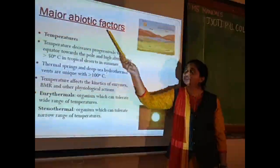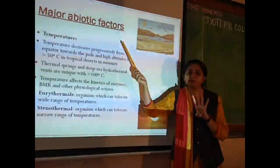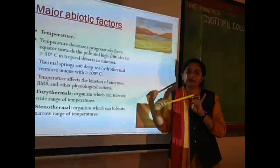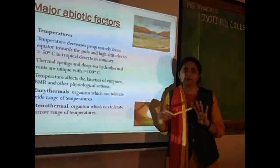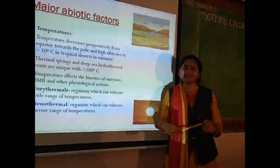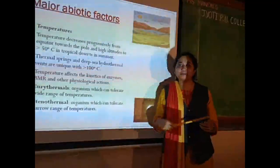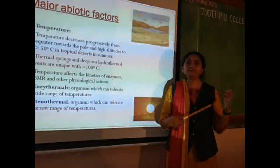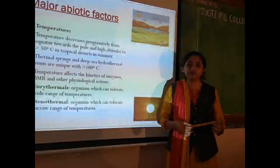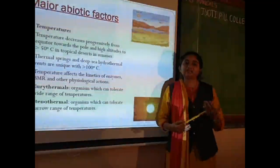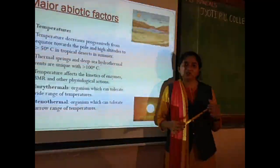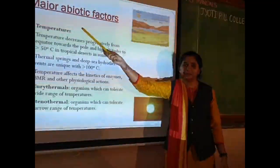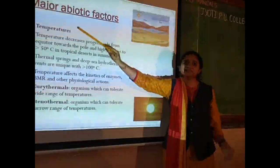Let us study the major abiotic factors. As I told you, there are four important abiotic factors: temperature, water, light, and soil. Let us start with the first one — temperature. Temperature is nothing but the degree of hotness or coldness — how hot or how cold it is, whether in the climate or in the internal environment of organisms.